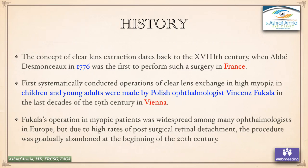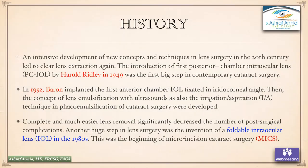We are going to start with the history of refractive lens exchange, which started in the 18th century when Abbé in 1776 was the first to perform such surgery in France. The first conducted clear lens extraction in high myopes in children and young adults was made by Polish surgeon Vincent Fukala in the late decades of the 19th century in Vienna. Fukala's operation in myopic patients became widespread across Europe, but due to a high rate of complications including retinal detachment, the procedure was gradually abandoned in the beginning of the 20th century.